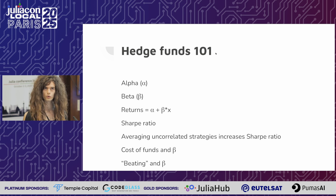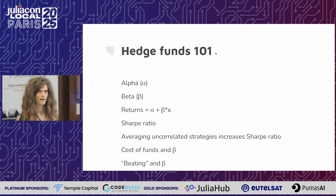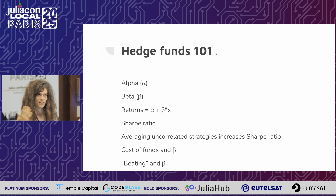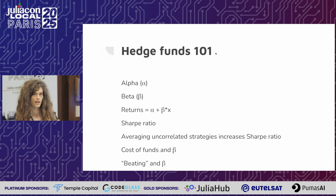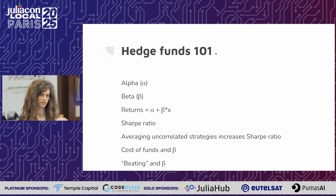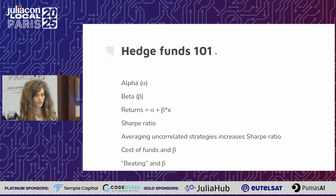Brief context for those of you who are familiar with Julia and not hedge funds. The goal is to make money. You buy things, you sell things. If you buy things and sell things and make money, that's called alpha. That's in contrast to beta — if you just buy a thing and hold it, that's beta. It's correlated with the market. You can think of returns as alpha plus beta times x, where x is what the market does.